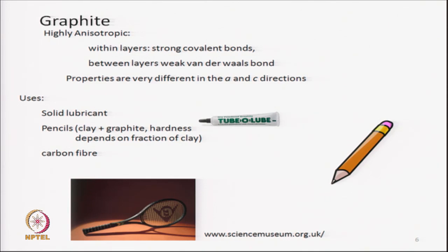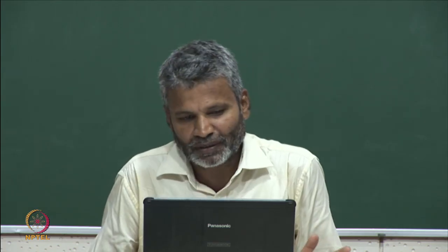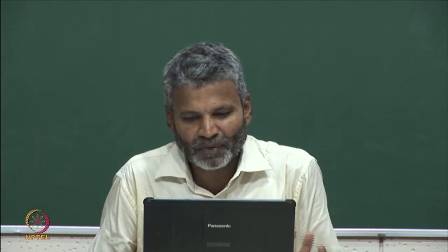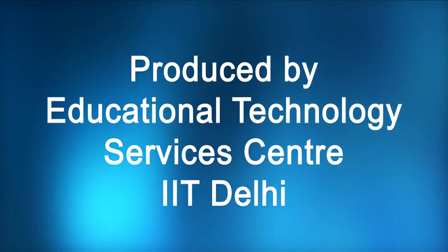With this we end this video. In the next video we will look at other forms of carbon: diamond, carbon nanotubes, and fullerene. One by one we will look at these other forms.